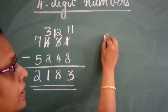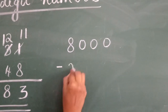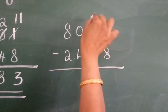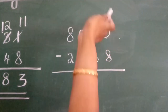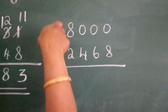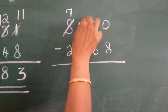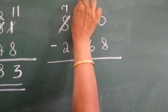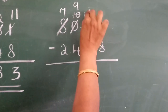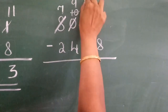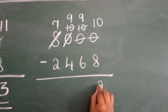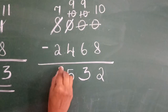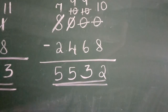Now, how to subtract when there are zeros? For example: 8,000 minus 2,468. 0 minus 8 is not possible. You want to take 1 from the previous number, but it is also 0 — so you move further left. It is 0 again, so you move to the thousands place. The 8 becomes 7. That position becomes 10; take 1, it becomes 9 and the next becomes 10; take 1 again, it becomes 9 and the units becomes 10. So: 10 minus 8 equals 2. 9 minus 6 equals 3. 9 minus 4 equals 5. 7 minus 2 equals 5. The answer is 5,532.